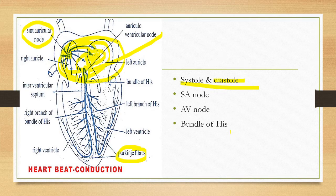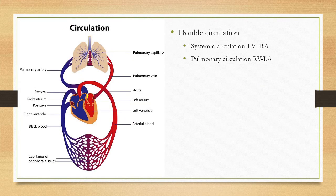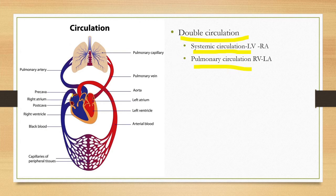Now let's look at how circulation happens. It is a double circulation because there are two circulations: one is called systemic circulation and the second is called pulmonary circulation. Systemic circulation circulates blood throughout the body. The systemic circulation starts from the left ventricle carrying pure blood.